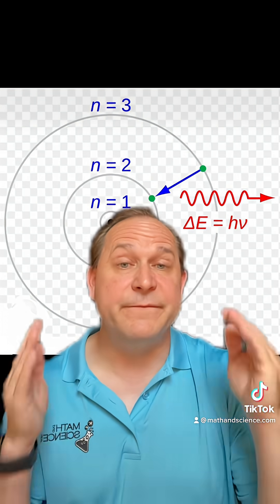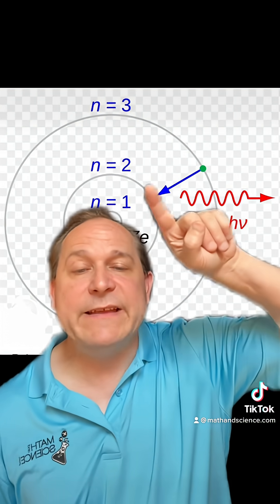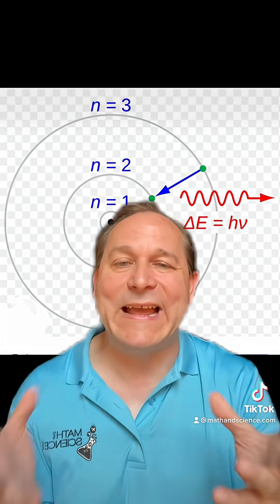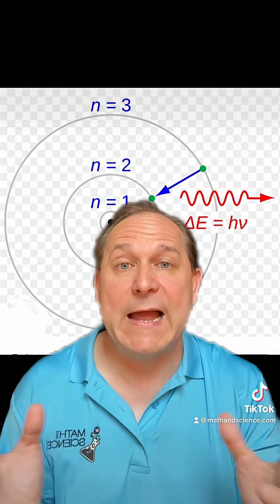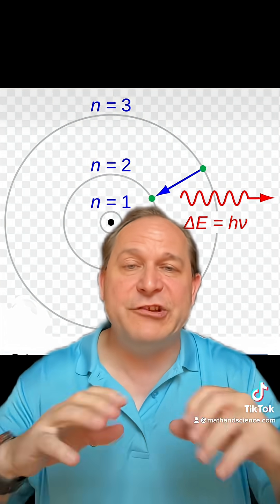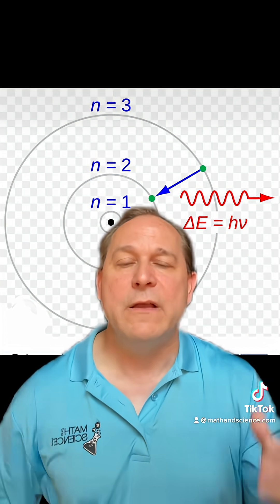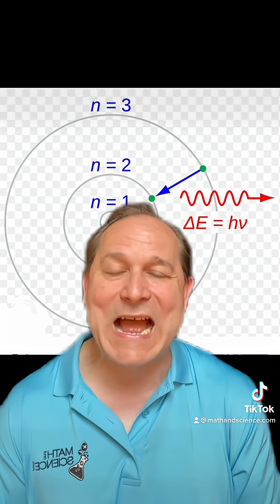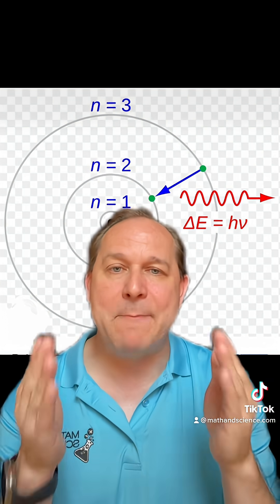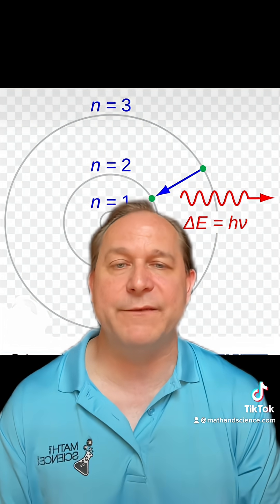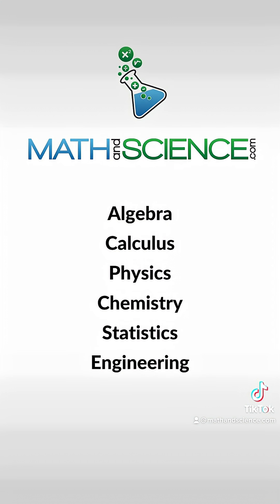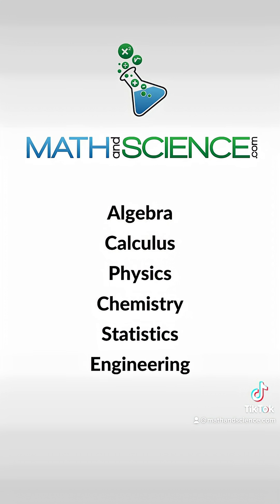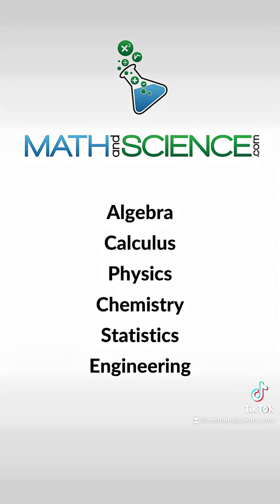But the energy of photons of visible light is on the order of these orbital transitions. That means it excites the electrons and causes a lot of reflection and scattering, so photons of visible light cannot penetrate matter like the bricks of your house. Learn more at mathandscience.com.